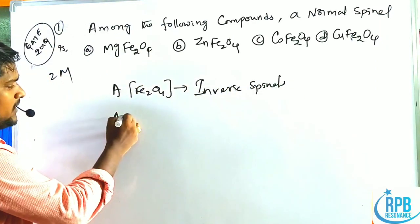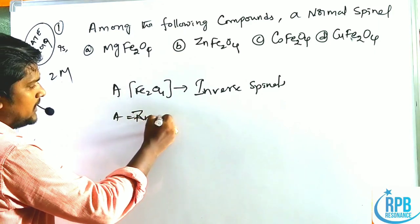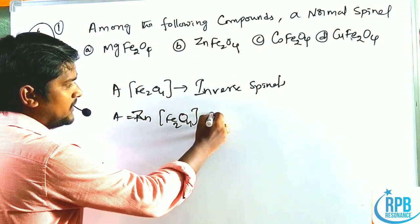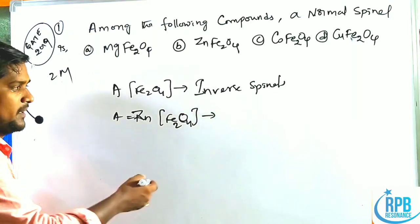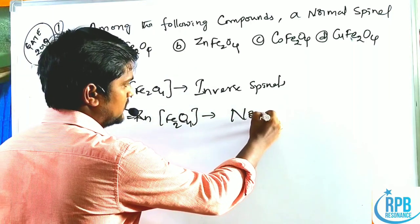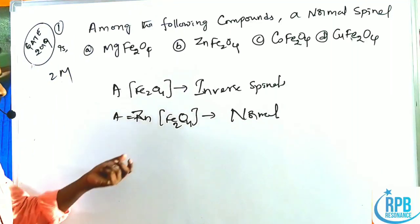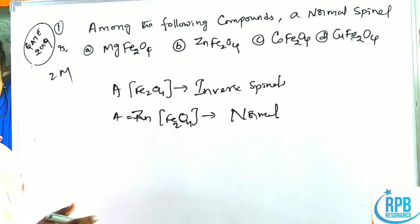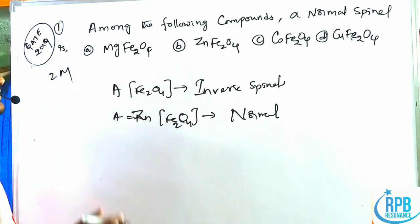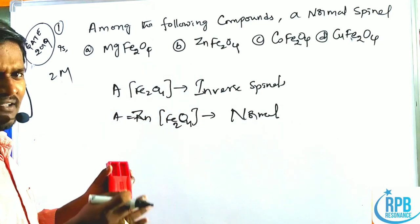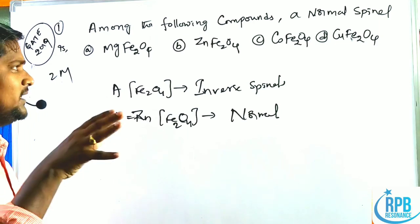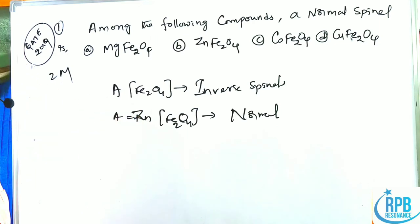Exceptionally, if A is equal to zinc, it can only form the normal spinel — we discussed this in our earlier basic class on spinels. The reason why ZnFe₂O₄ is a normal spinel was also discussed in that class. So with this rule, we can answer the question within 30 seconds.